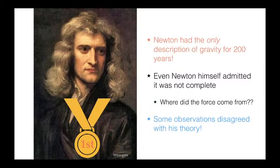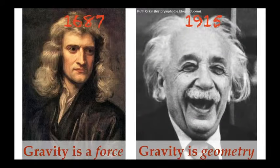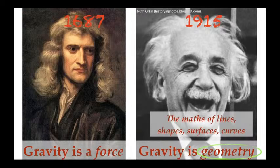Newton didn't understand where this invisible force came from, or what was driving it. Some astronomical observations actually disagreed with some predictions from Newton's theory. Now we're going to move on to Albert Einstein — a very clever guy. While Newton told us that gravity is the result of an invisible force, Einstein told us that gravity is a consequence of geometry: the mathematics of lines, shapes, surfaces, and curves.